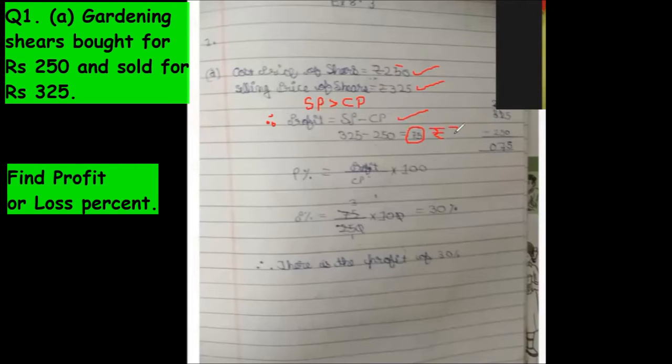Okay now profit percentage which is profit upon CP into hundred. Profit equals 75 upon 250 into hundred. Therefore is a profit of 30 percent, good.